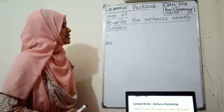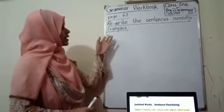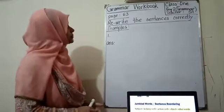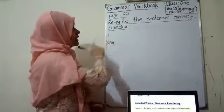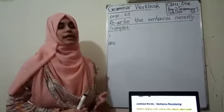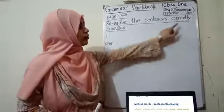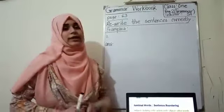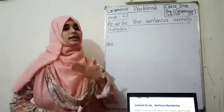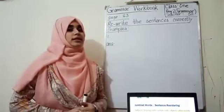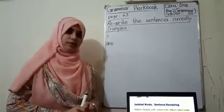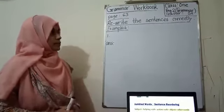So page number 63, there was an exercise. What was the topic? The topic was: rewrite the sentences correctly. Rewrite means you have to write it again, and focus on the word 'correctly' — the sentences given in your book are in a wrong way and you have to write them in a correct, proper way.